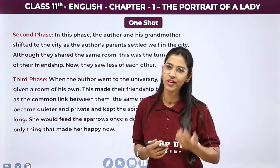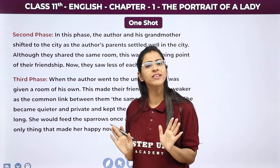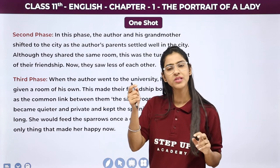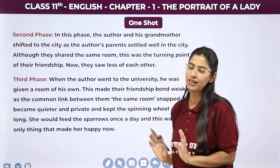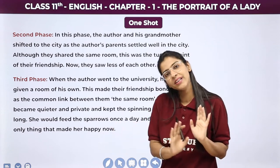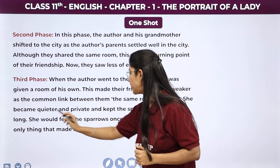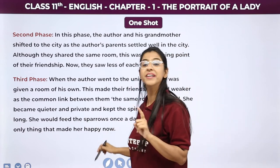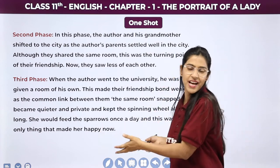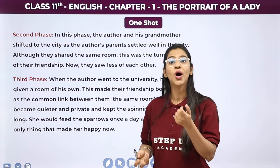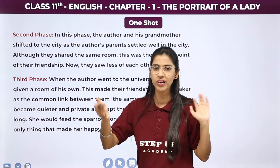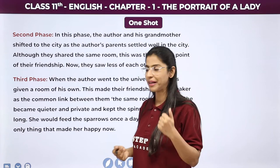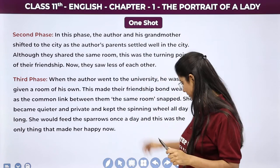Moving to the third phase — when the author went to the university, he was given a room of his own. Ab yahan par to sab alag ho gayi thi cheizein, kyunki ab Khushwant Singh apni grandmother ke saath room bhi share nahi karte the. This made their friendship even weaker, as the common link — the same room they shared — snapped. She became quieter and private, kept the spinning wheel all day long. She would feed the sparrows once a day, and this was the only thing that made her happy.